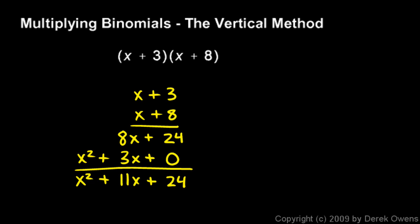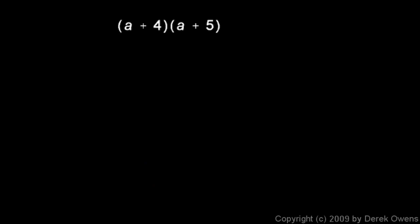I'll do another example. Here we have a plus 4 times a plus 5. So I'll write a plus 4 and a plus 5, draw a line, and I start 5 times 4, and that's 20.